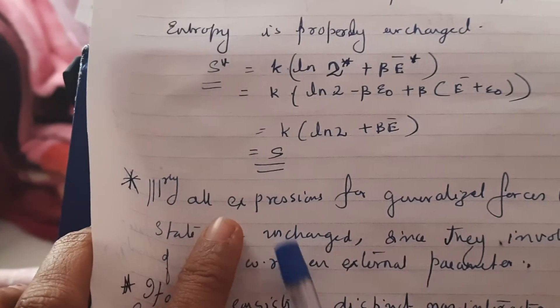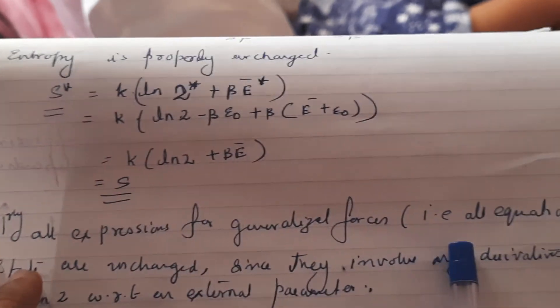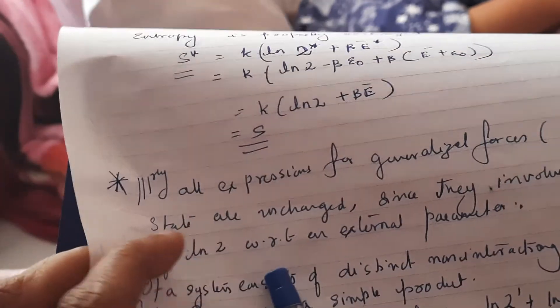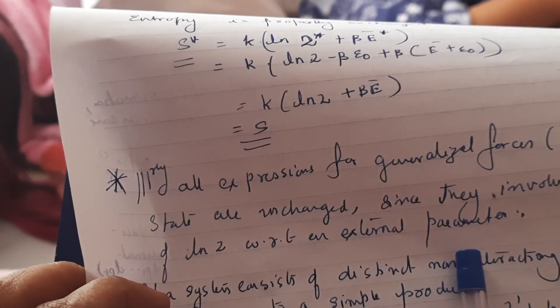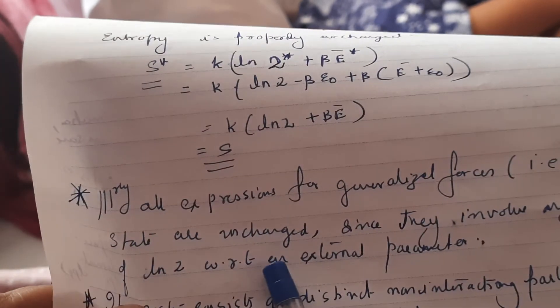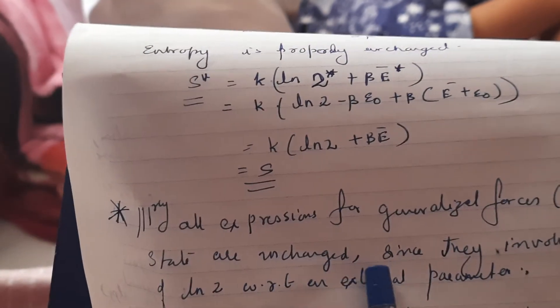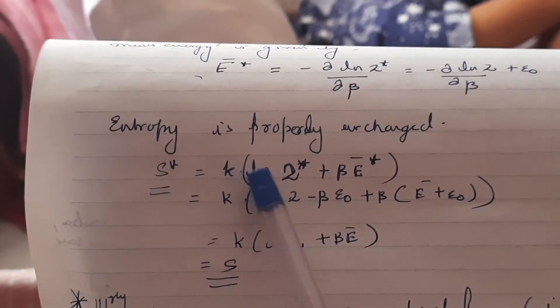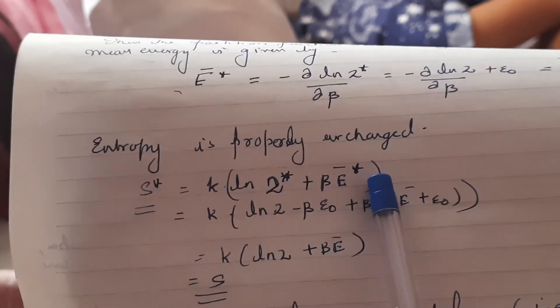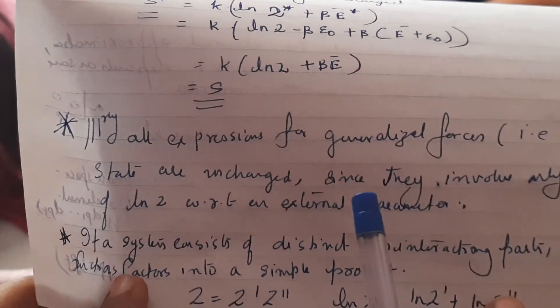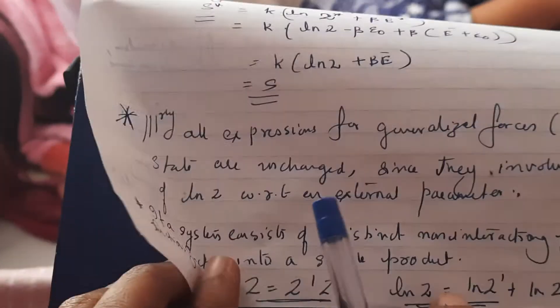All expressions for generalized forces — that is, equations of state — are unchanged, since they involve only derivatives of ln Z with respect to an external parameter. Because it just involves the derivatives of ln Z, entropy did not change even though you added energy epsilon_0; it gave back the same value. So adding a constant energy to the system does not affect the entropy or the equations of state.